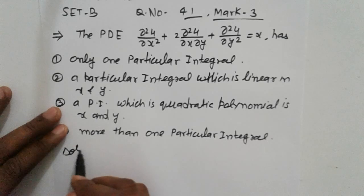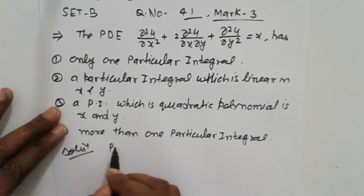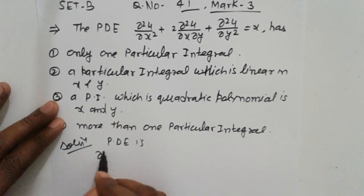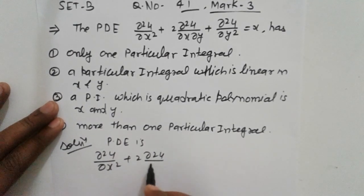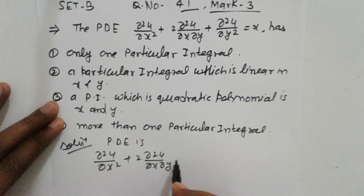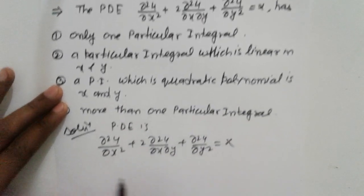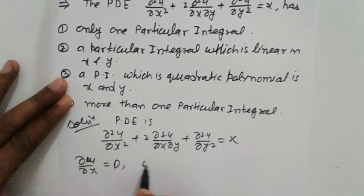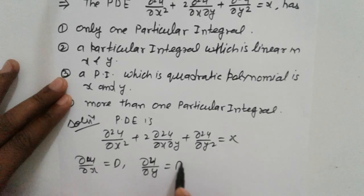Let's write down the differential equation. The partial differential equation is: ∂²u/∂x² + 2·∂²u/∂x∂y + ∂²u/∂y² = x. Here we denote ∂/∂x as D and ∂/∂y as D'.